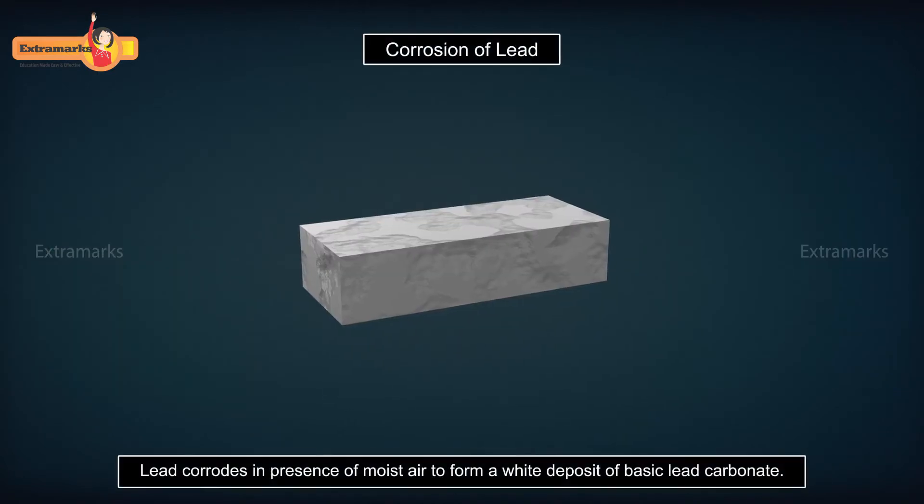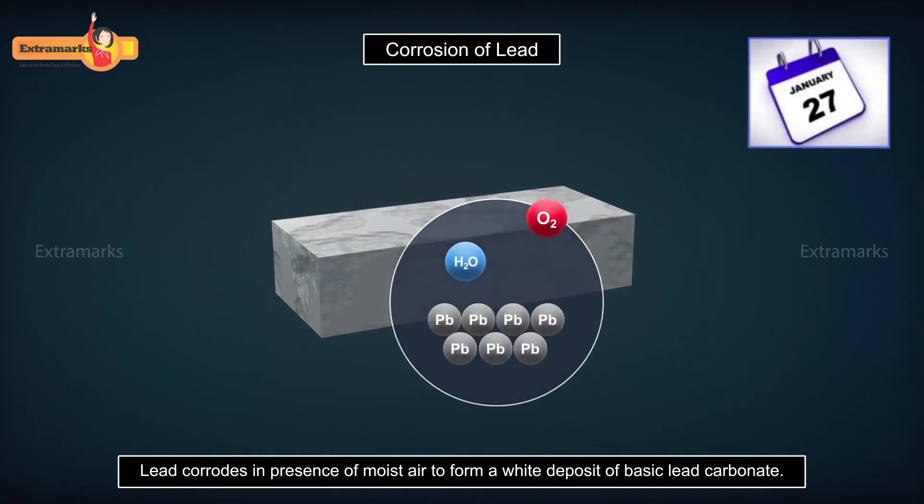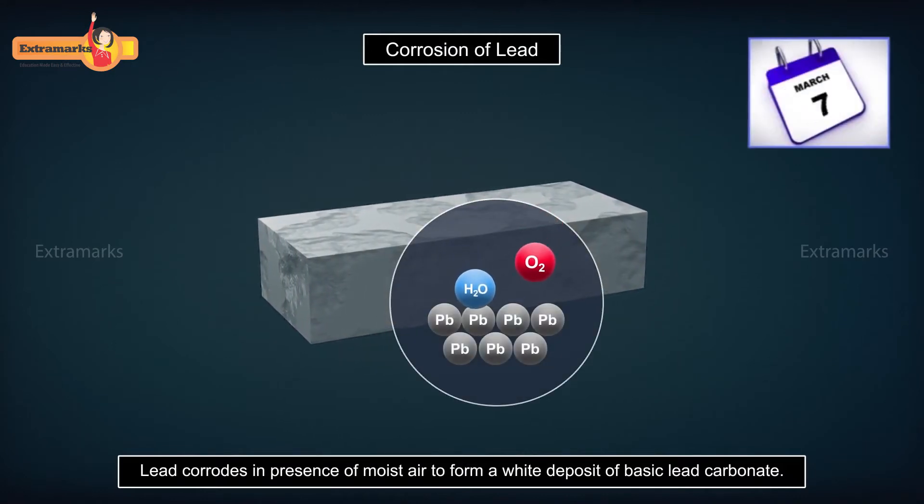Lead also corrodes. A white deposit of basic lead carbonate is formed on the surface of lead when it comes in contact with moist air.